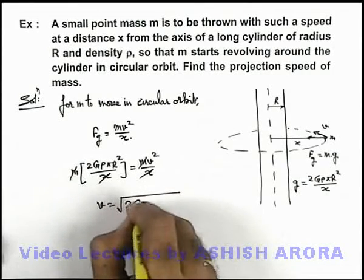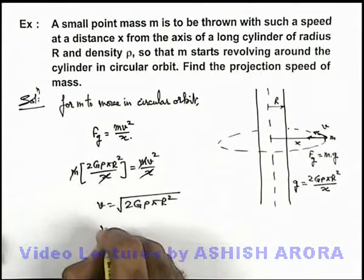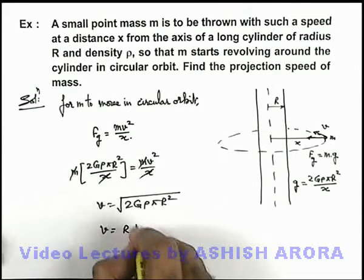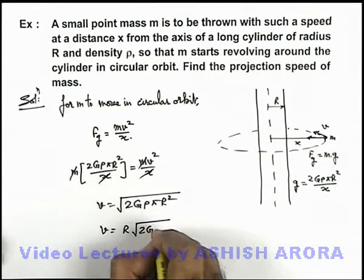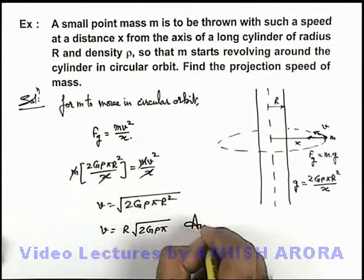The value of speed we are getting is root of 2 G ρ π R squared, or it can be written as R root of 2 G ρ π. That will be the answer to this problem.